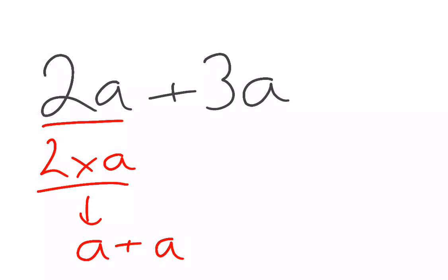3a is 3 lots of a. That's a plus a plus a. And if we've got 2a plus 3a, you can see that what we've got here is 5 lots of a. Basically, 2 lots of a plus 3 lots of a equals 5 lots of a. We've just collected like terms, and that is why we can add and subtract like terms.